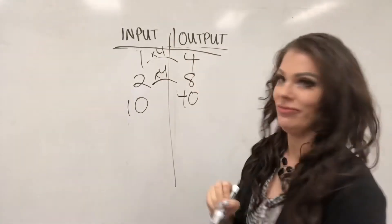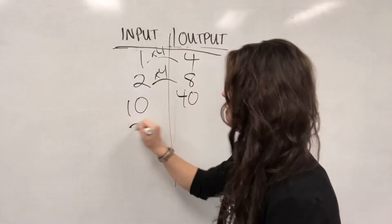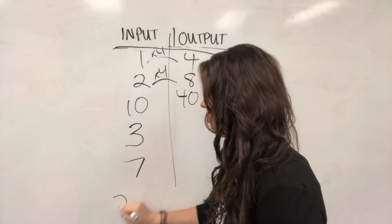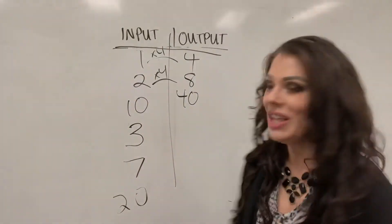And these numbers might not go in order, so don't let that freak you out. It could be a 3, it could be a 7, it could be a 20. Keep the pattern, just times you by 4. Okay, so I hope that helps.